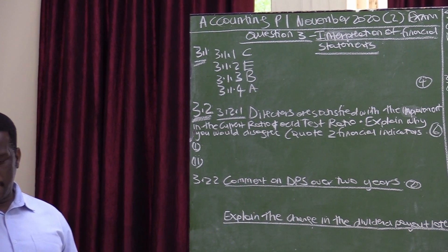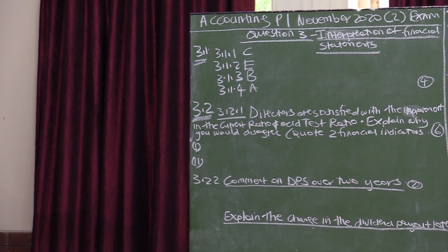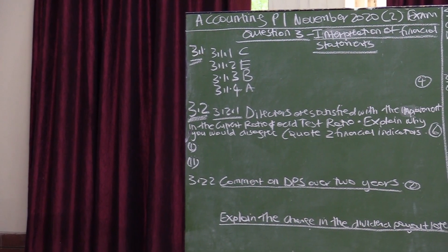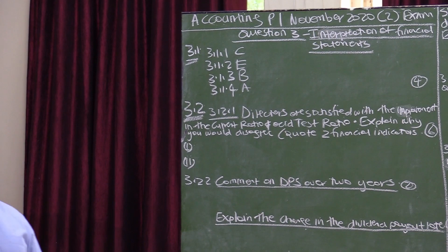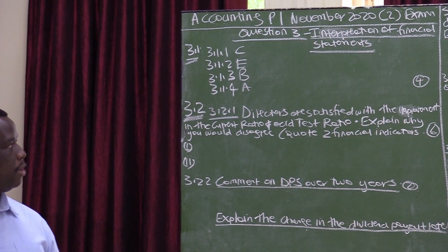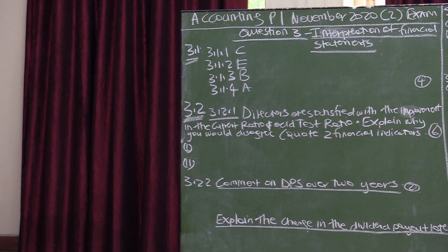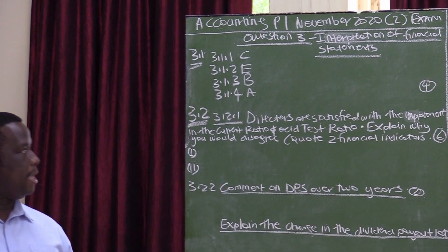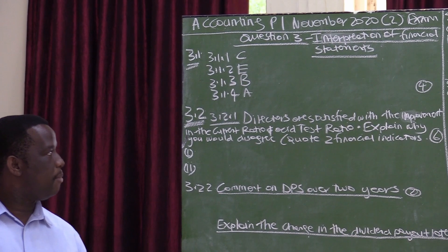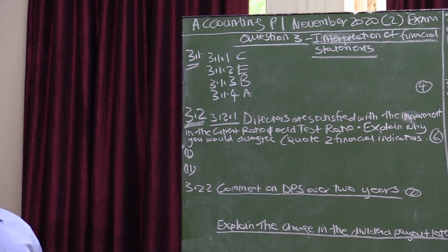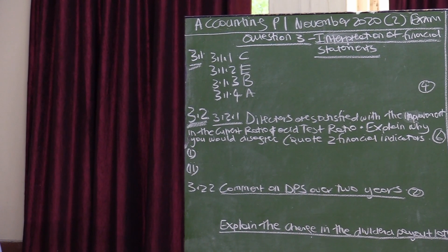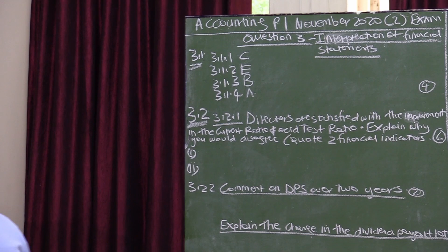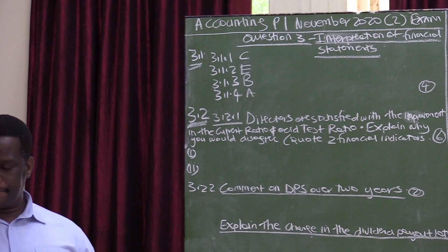So if we re-look at the answers: 3.1.1 is C, 3.1.2 is E, 3.1.3 is B, and 3.1.4 is A. And that gives you a total of 4 marks.